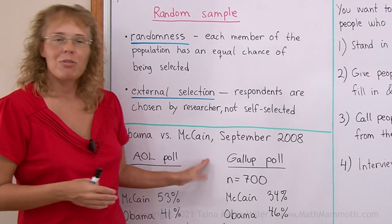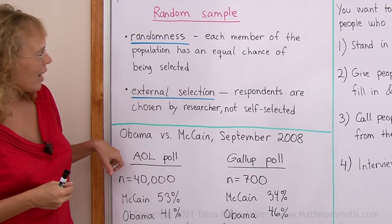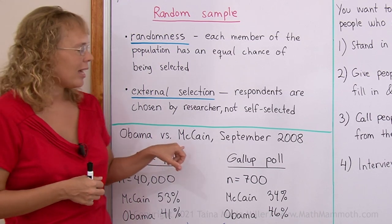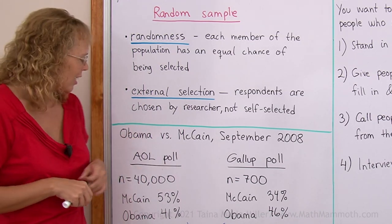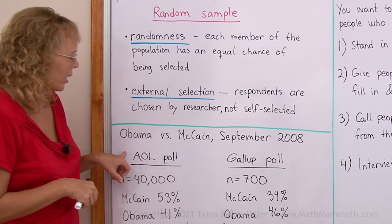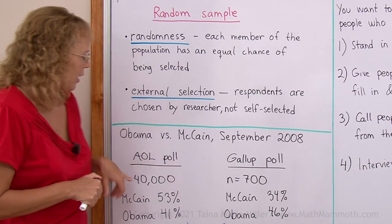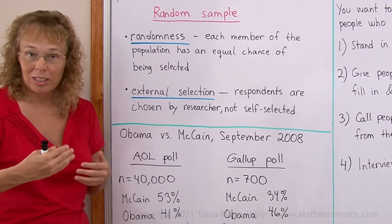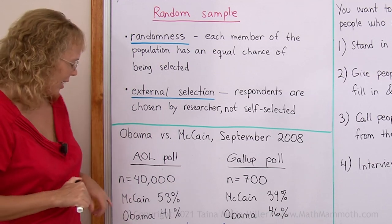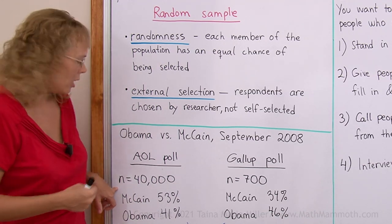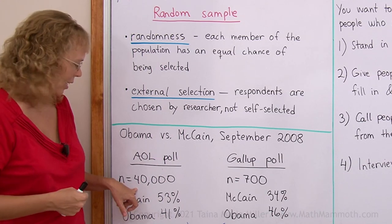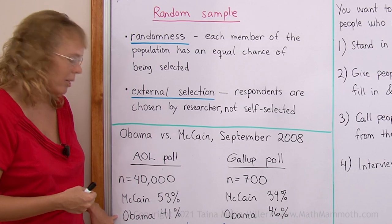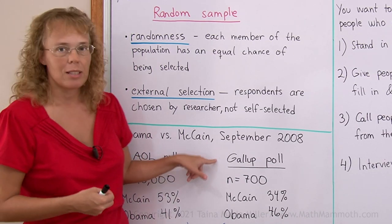This example will hopefully make this clear. In 2008, in the presidential campaign — Obama versus McCain — there were several polls done. Here are two: the AOL poll and the Gallup poll. The AOL poll was done on the AOL website, and anybody who came to the website could take this poll. The sample size was 40,000 people. The results: McCain 53%, Obama 41%.